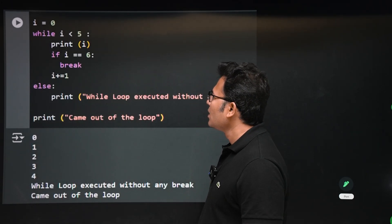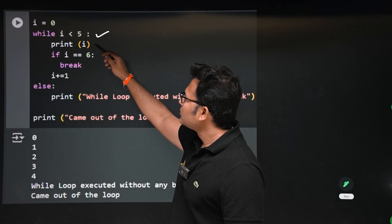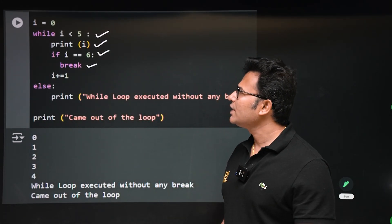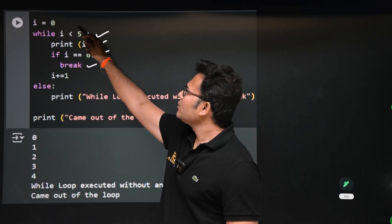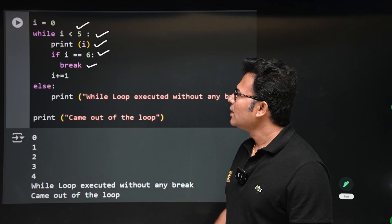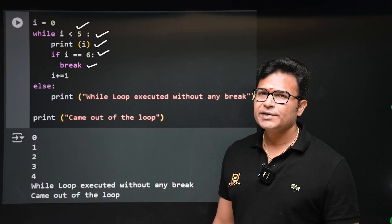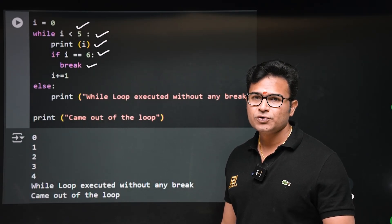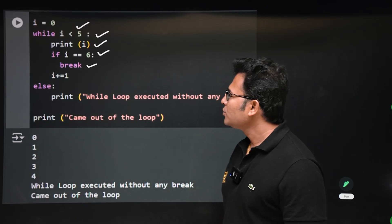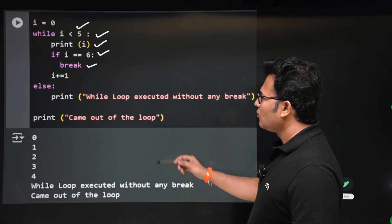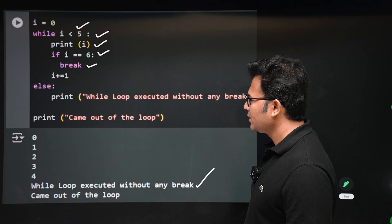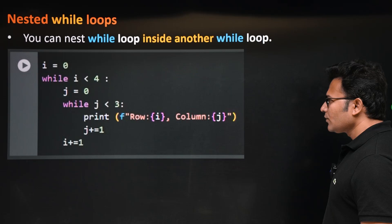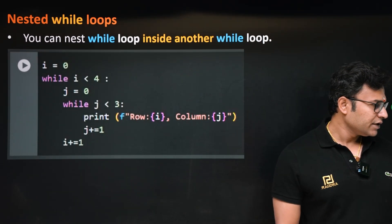In another case: while i less than 5, print i, if i equal to 6 break — 6 will never be reached because when i reaches 5 the condition becomes false. So break will never be touched, meaning it is never executed. Therefore else will get executed — even though there is a break, it was never executed, so we go to the else part and print 'while loop executed'. 'Came out of the loop' at the end has no relation with while/else; it is separate code.